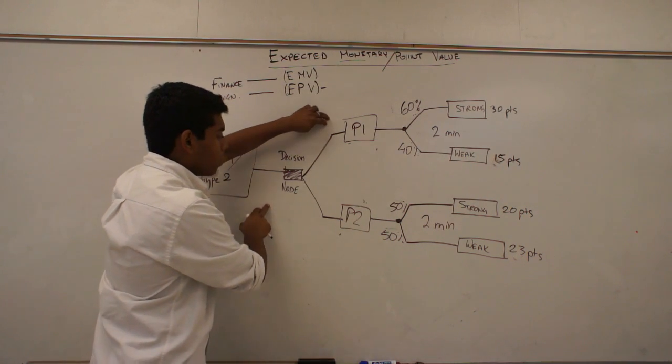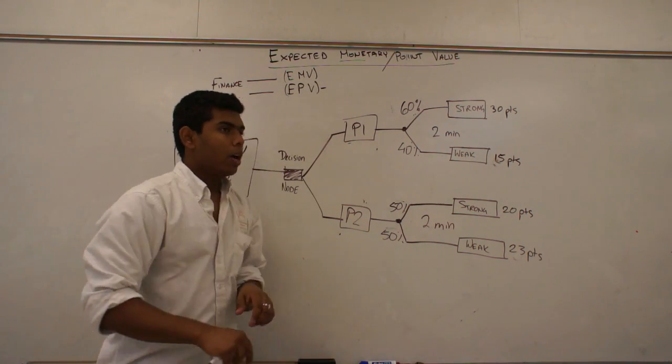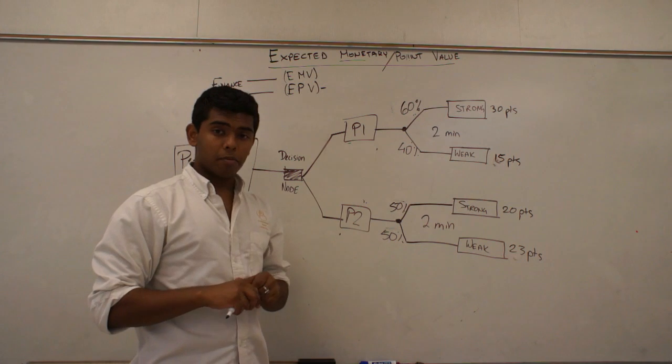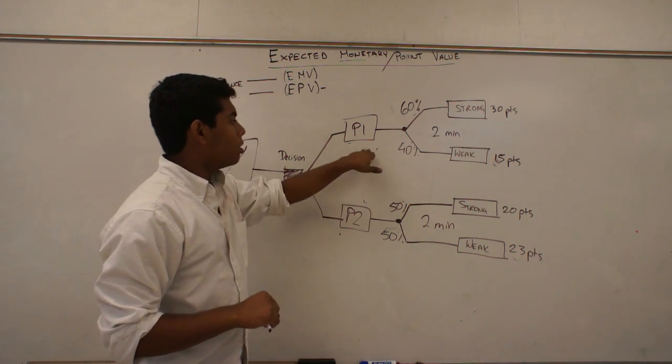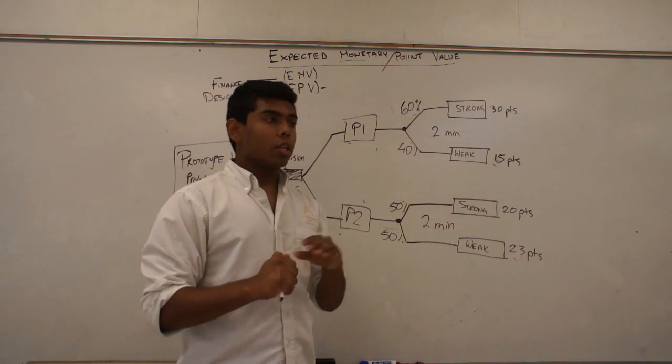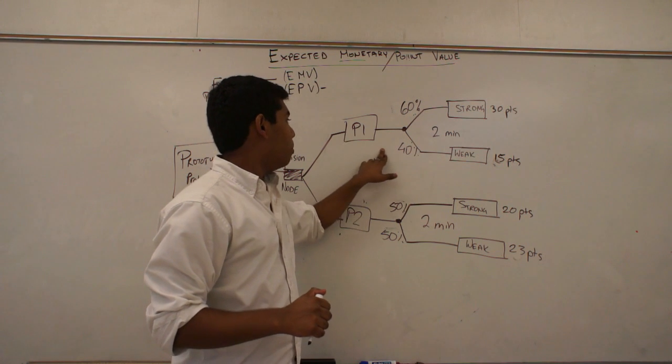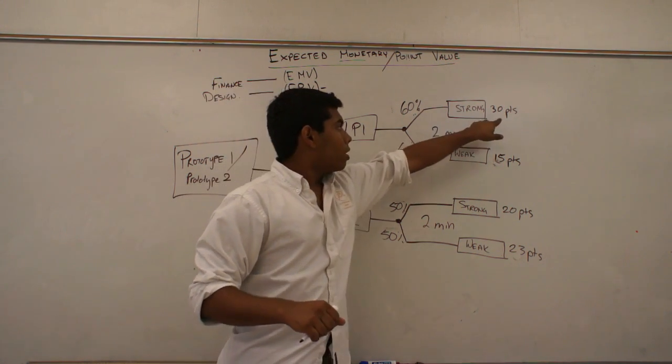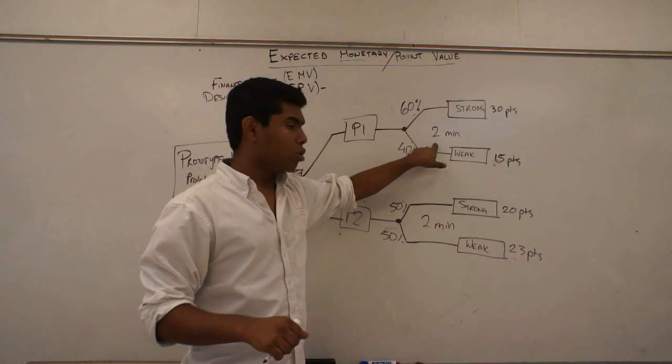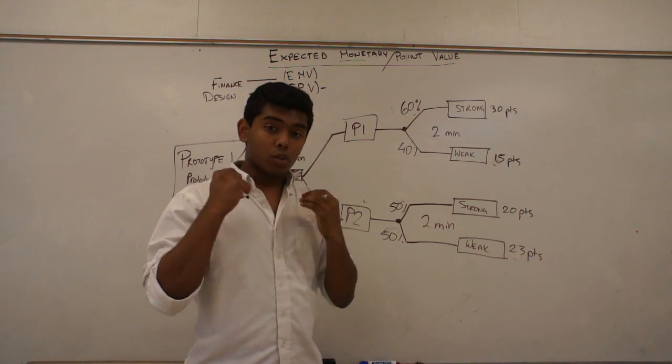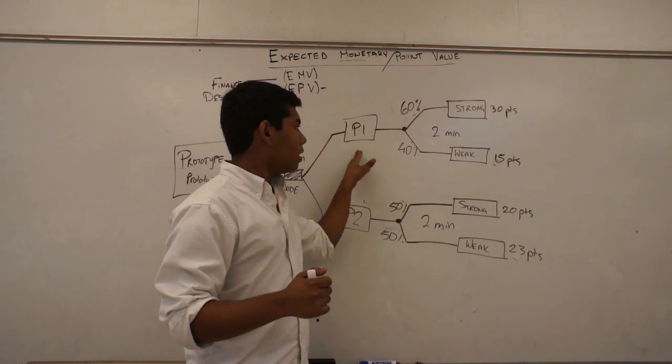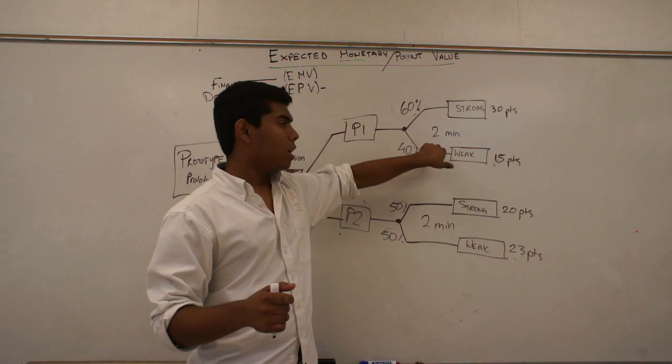I come to a decision whether I want prototype one or prototype two. Based on the tests I've taken, I know that prototype one, at its best, can make 30 points in two minutes. And in its weakest performance, prototype one can make 15 points in two minutes.